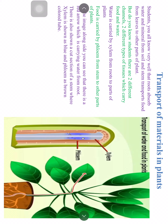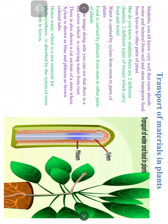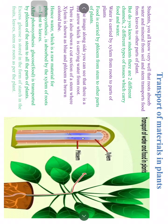Water, as a raw material for photosynthesis, is absorbed by xylem of roots and sent to the leaves. After photosynthesis, glucose is transported by phloem of the stem to all parts of the plant. Excess glucose is stored in the form of starch in fruits, leaves, stem, or roots, depending upon the type of plant.